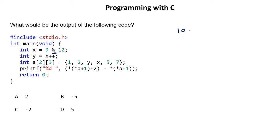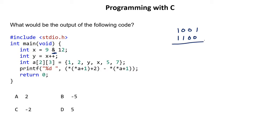So we are performing 9 AND 12. Representing 9 in binary: 1001. For 12 in binary: 1100. Recall that in AND operation — like an AND gate — you get 1 only when both inputs are 1; if any input is 0, you get 0. Performing the AND: 1001 AND 1100 gives 1000.